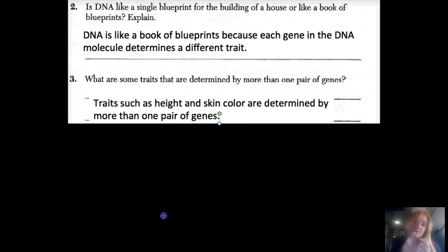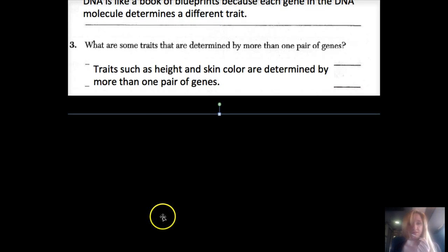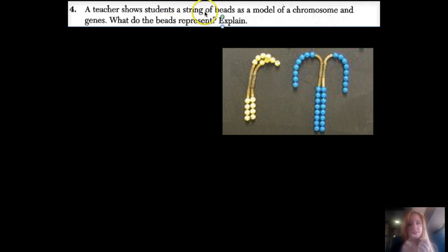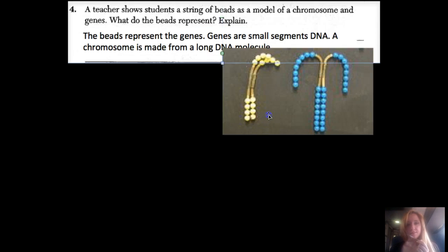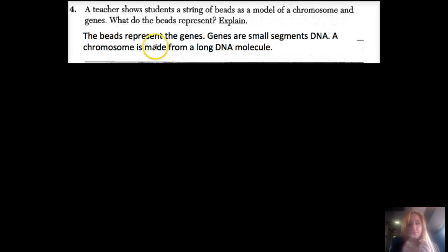Number four: A teacher shows students a string of beads as a model of a chromosome and genes. What do the beads represent? Explain. The beads are the genes. Genes are small segments of DNA. A chromosome is made up of a long DNA molecule.